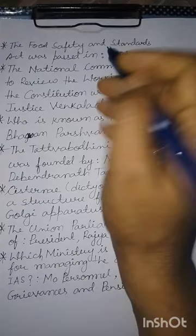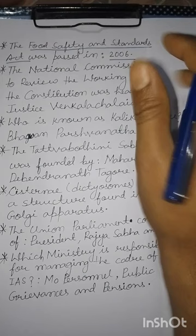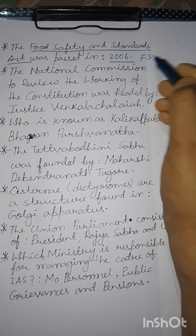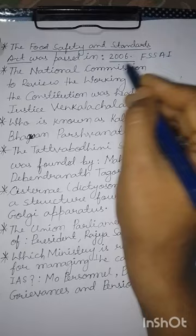The Food Safety and Standards Act was passed in the year 2006. Food Safety and Standards Adhiniyam 2006 में पास किया गया था। इसी के द्वारा FSSAI — the Food Safety and Standards Authority of India — बनाया गया। It was created under the power granted by the FSSA Act 2006.